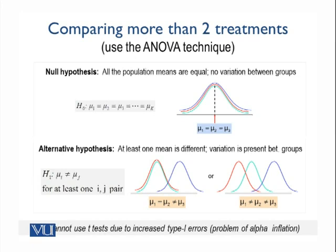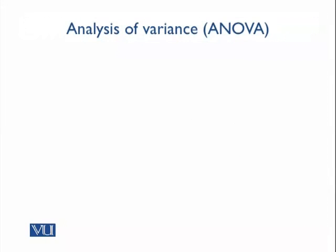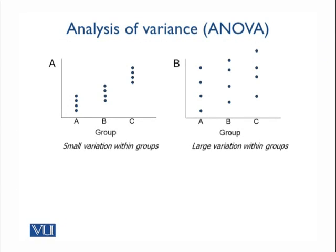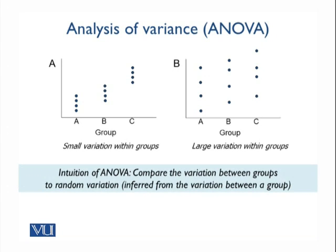We cannot use many T-tests for this — we need the ANOVA test. The intuition is: if you want to compare multiple groups, you get an idea about random variation from the amount of variation within a group. Then you take a ratio of the variation between the groups and normalize it by dividing by the variance within a group. This is the analysis of variance method. The name says 'analysis of variance,' but what we are really interested in is whether treatments have the same population mean.